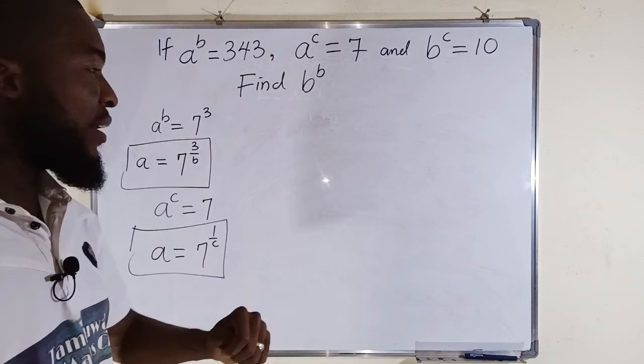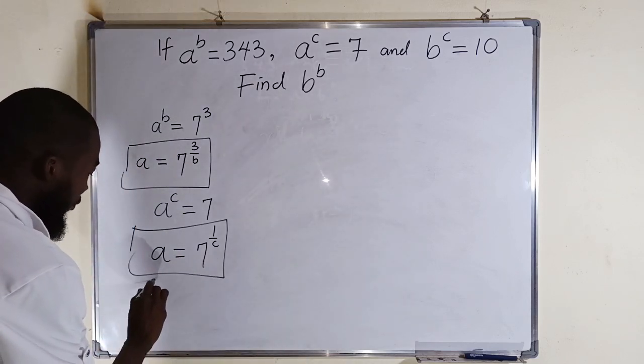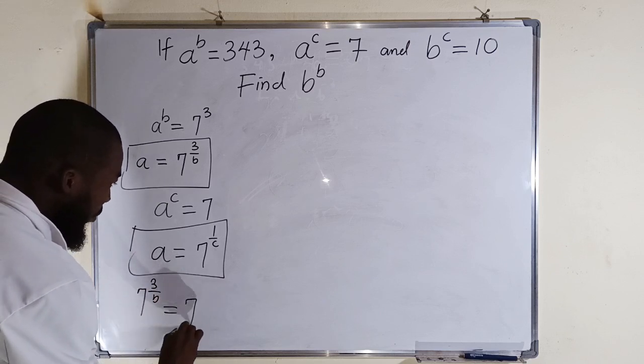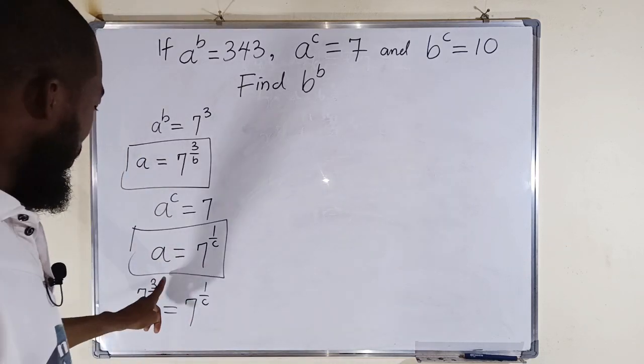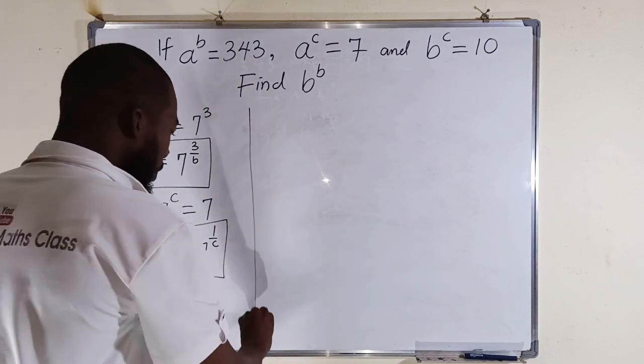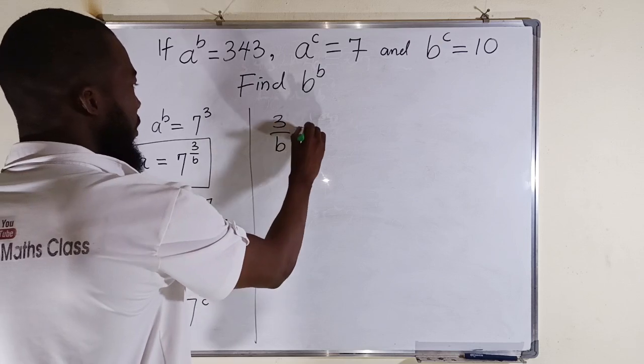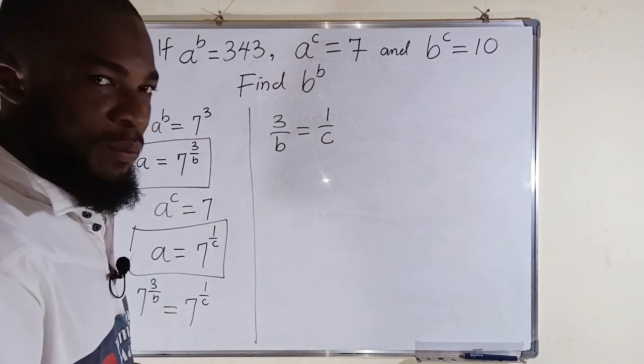Therefore, we can equate the right-hand side, which implies that 7 to the power of 3 divided by b is equal to 7 to the power of 1 divided by c. Which means 3 divided by b must be equal to 1 divided by c.